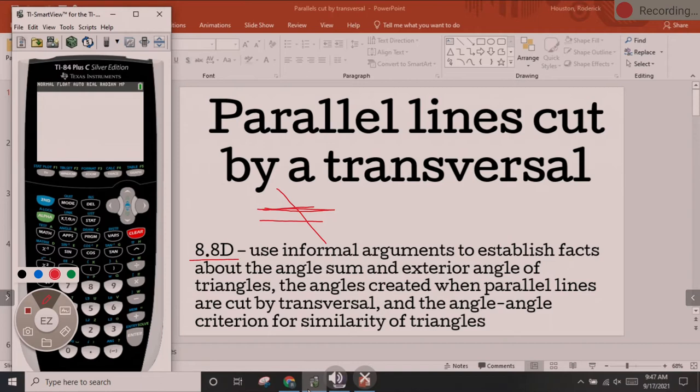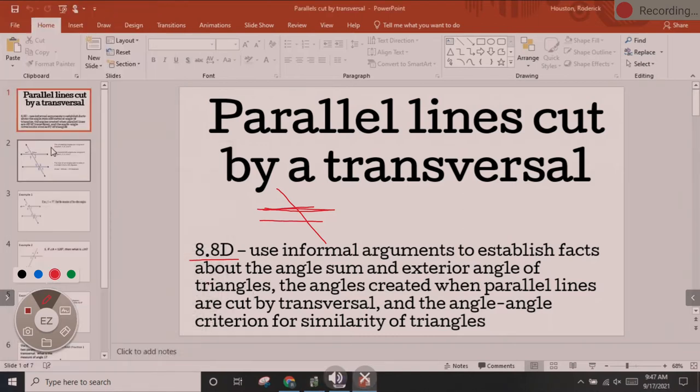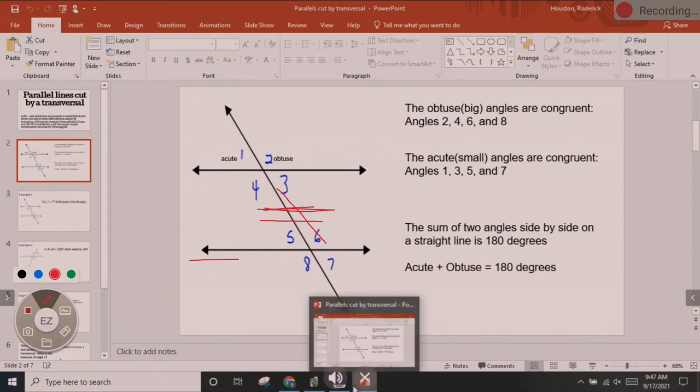The TEKS is 8.8D. Use informational arguments to establish facts about the angle sums and exterior angles of triangles, which is what we did yesterday. The angles created when parallel lines are cut by a transversal.